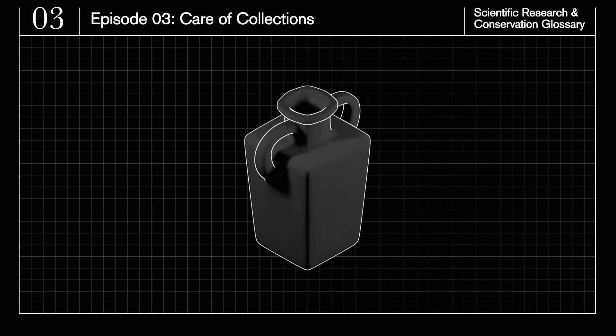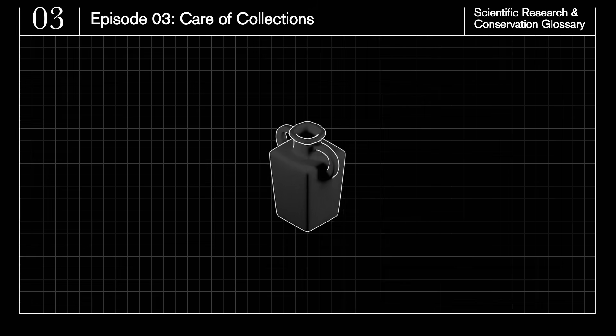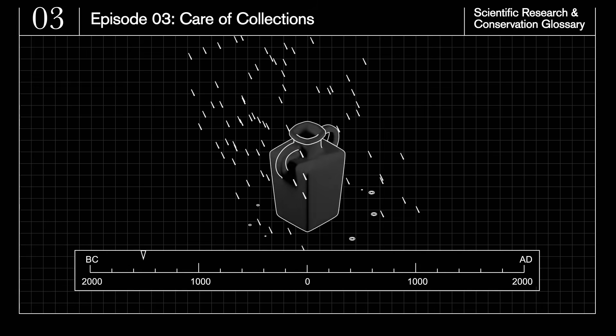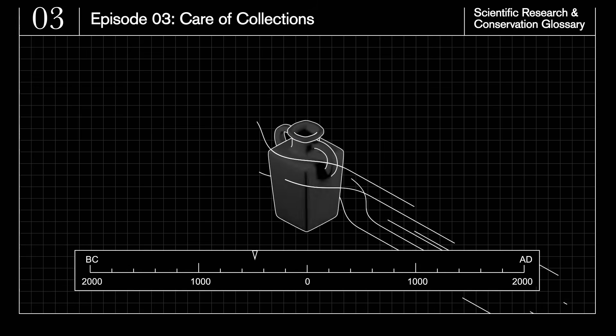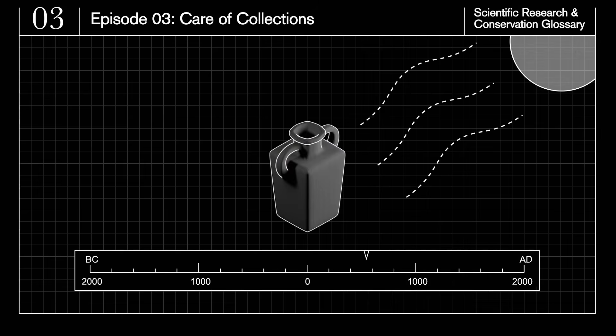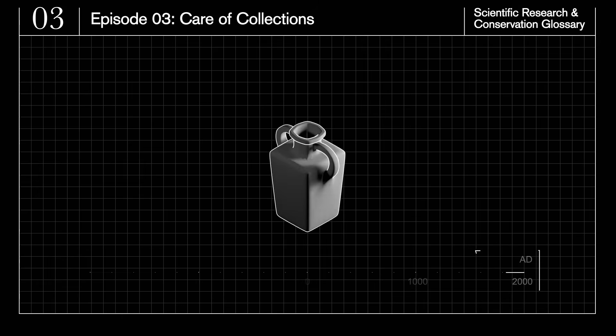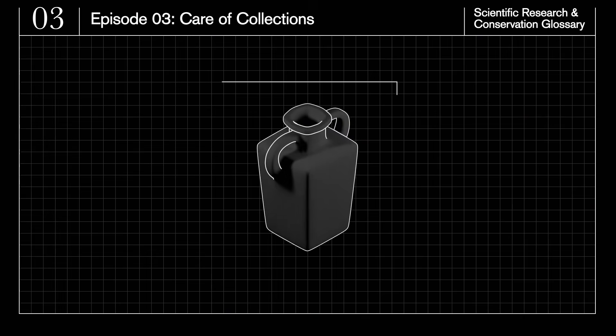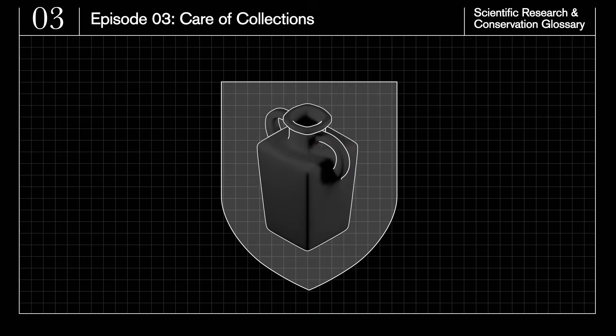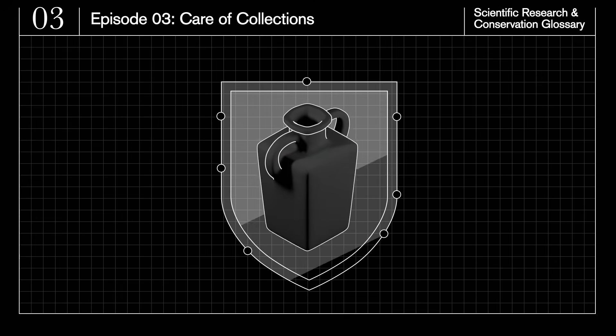Episode 3 – Care of Collections. The museum's objects withstand centuries, sometimes millennia, of exposure to the air, humidity and volatile agents. Care of collections involves preventive conservation, a specialism which protects collections by identifying threats to them and taking action to reduce risks.